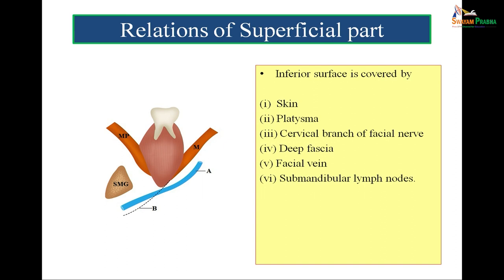Relations of the superficial part: the inferior surface is related to skin, platysma, the cervical branch of the facial nerve, deep fascia, facial vein, and the submandibular lymph nodes. In the figure, B on the inferior aspect is the superficial layer of the deep fascia, and A is the facial vein. MP represents the medial pterygoid muscle while M represents the masseter muscle.